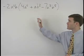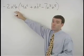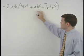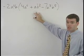To simplify this problem, we can distribute the monomial through each of the terms in the trinomial that's inside the parentheses.